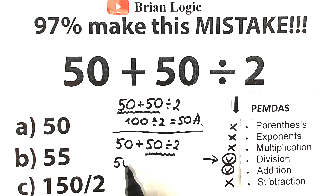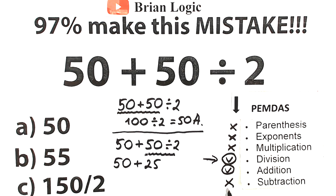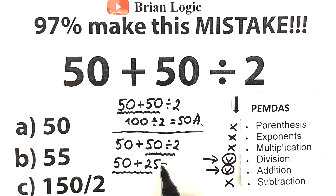Applying this: 50 divided by 2 equals 25. Then the last step is addition: 50 plus 25 equals 75.